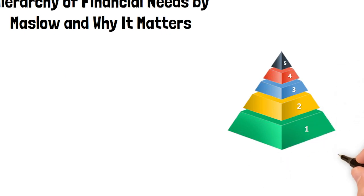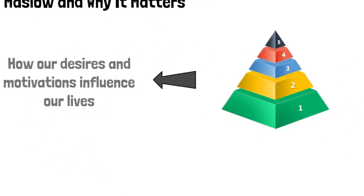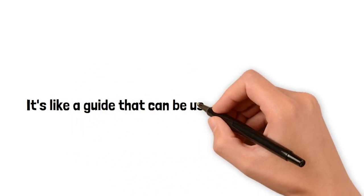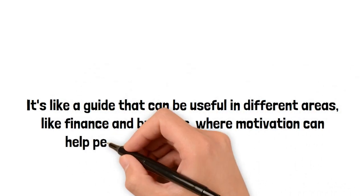Maslow's hierarchy of needs tells us how our desires and motivations influence our lives. It's like a guide that can be useful in different areas, like finance and business, where motivation can help people reach their fullest potential.